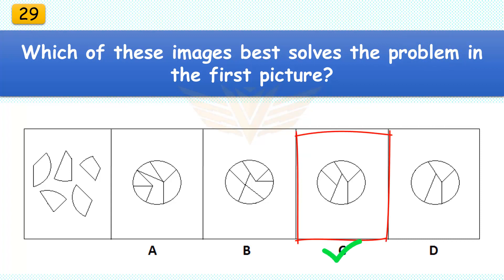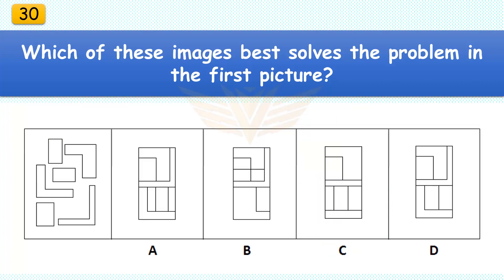Which of these images best solves the problem in the first picture? The correct answer is C. There are five pieces in the assembled puzzle.